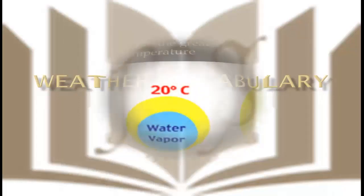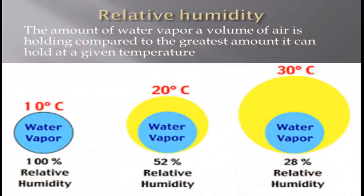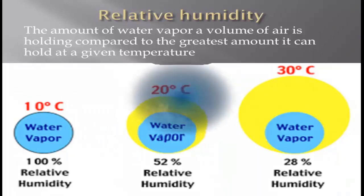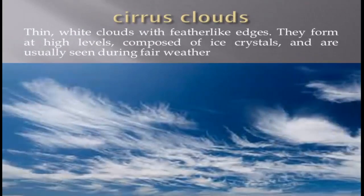Relative humidity: the amount of water vapor a volume of air is holding compared to the greatest amount it can hold at a given temperature. Cirrus clouds: thin white clouds with feather-like edges.